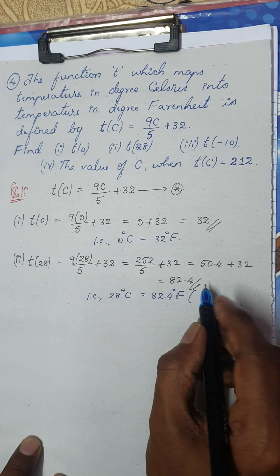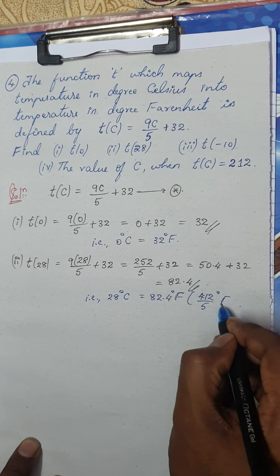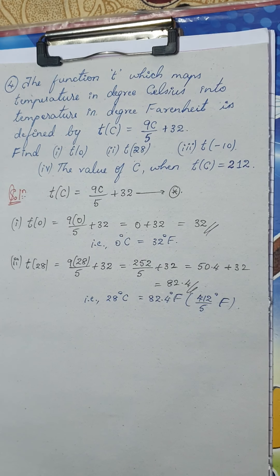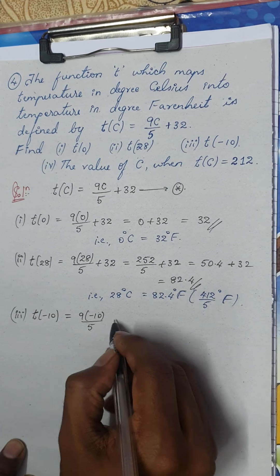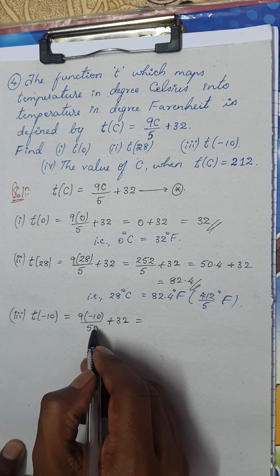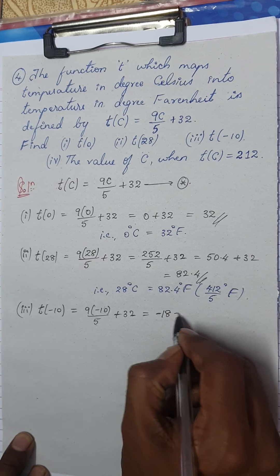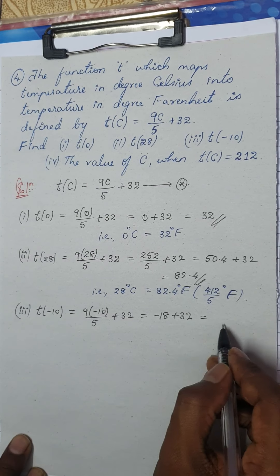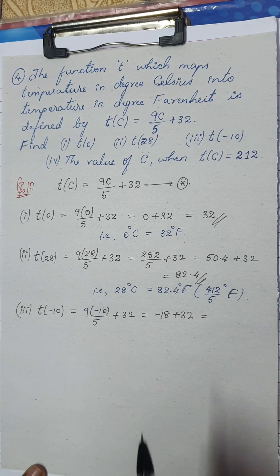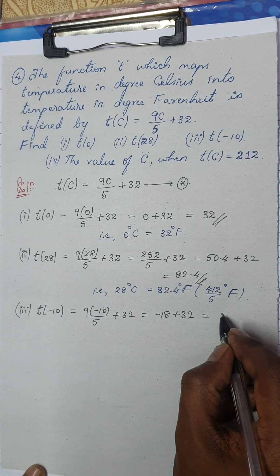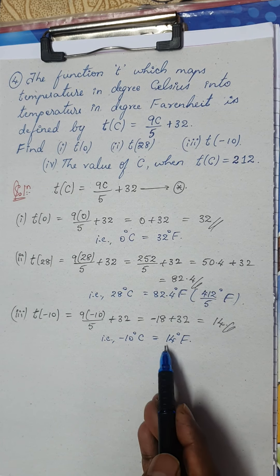For T(-10): T(-10) = 9×(-10)/5 + 32. Cancelling 5 and 10 gives -2, so 2×9 = -18. Then -18 + 32 = 14 degrees Fahrenheit. So minus 10 degrees Celsius equals 14 degrees Fahrenheit.